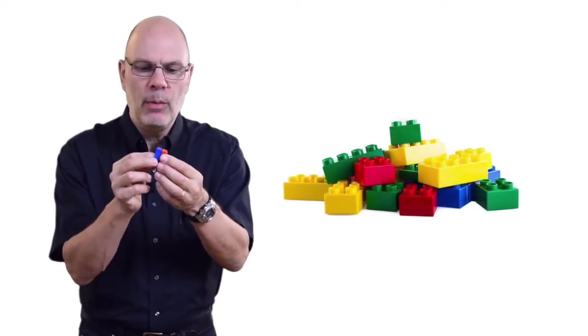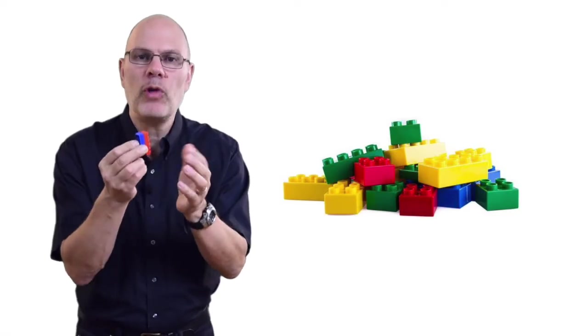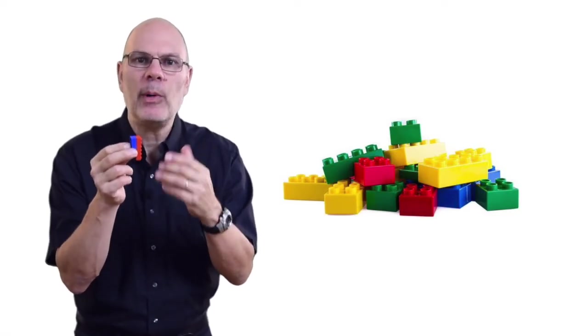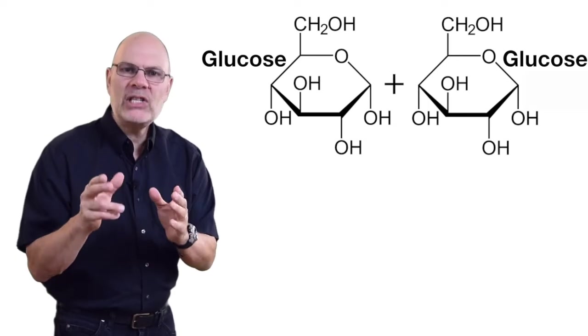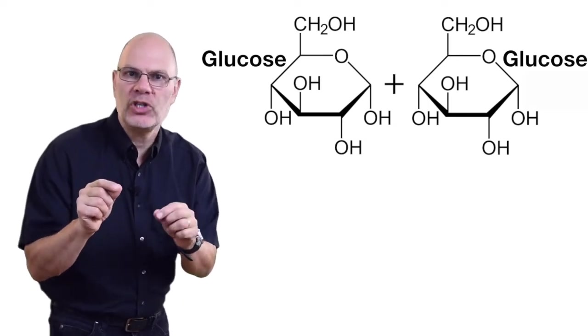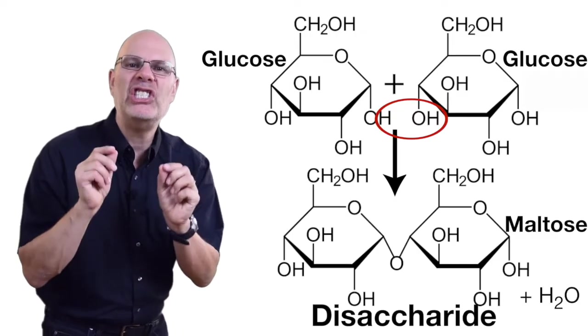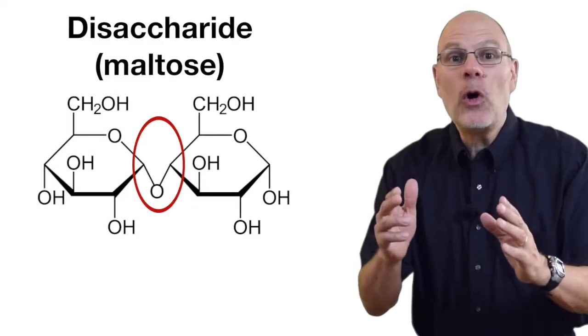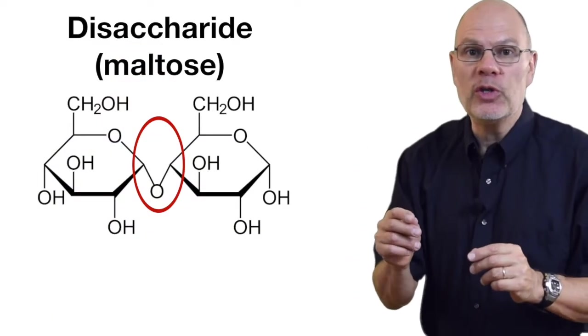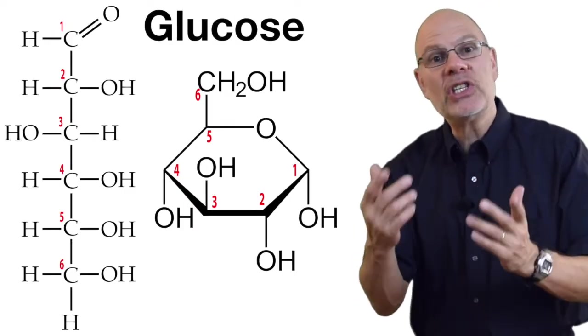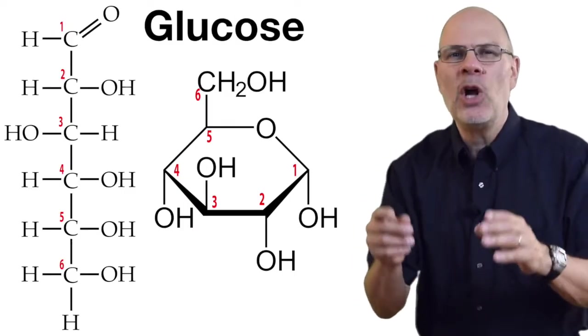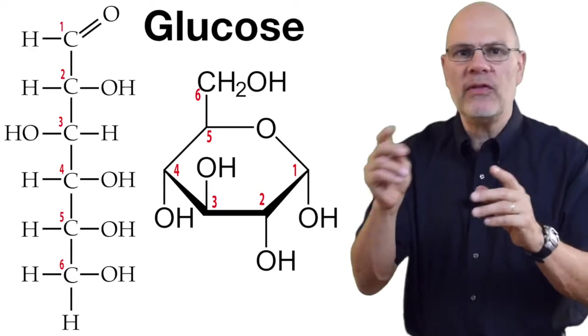Monosaccharides are the monomers of carbohydrates. In my video about monomers and polymers, I compared monomers to Legos that can be put together to create larger structures. When enzymes link two glucose monomers together through a dehydration synthesis, we get maltose, a disaccharide. Let's focus on the bond between the two glucose monomers. To do that, we're going to use a system that biochemists have devised, where they assign a number to each of the carbons in a monosaccharide.